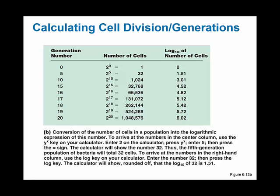Another very useful number when calculating generations is the log base 10 of the number of cells, mostly because individual cell counts get very large very fast. The 20th generation is a million cells, but the 21st doubles to 2 million, and the 22nd doubles again to 4 million. When numbers get that large, they're almost impossible to plot on a graph. If you convert the number of cells to a log base 10 value, you can plot them much more easily.